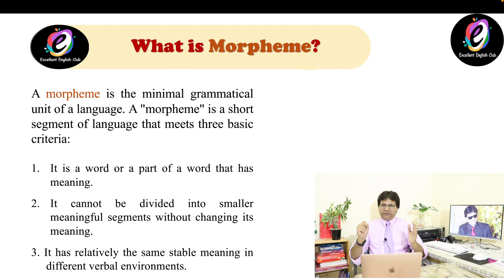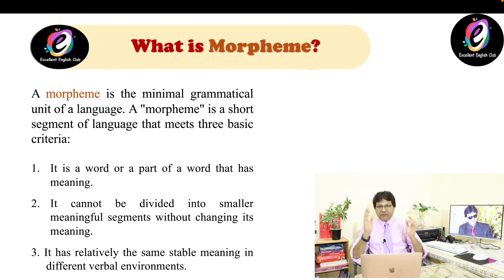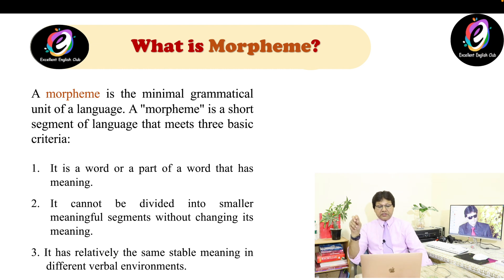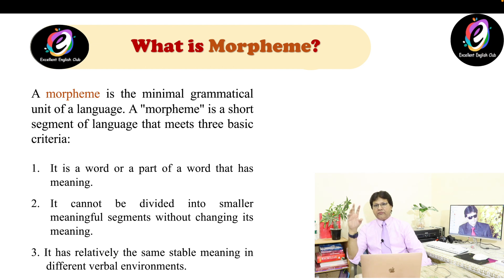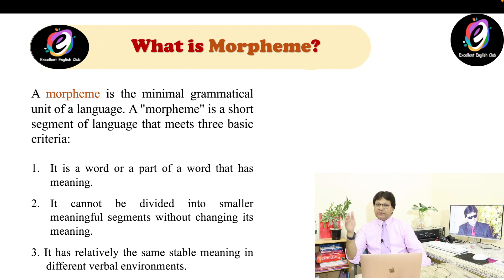We cannot divide a morpheme further into a smaller unit because if we divide it, it may change its meaning. The third criterion is that it has a relatively stable meaning in different verbal environments — relatively the same stable meaning. So these are the three criteria of a morpheme: a minimal grammatical unit which has meaning, cannot be further divided, and maintains stable meaning. It is a part of a word or maybe a small word itself.